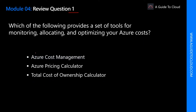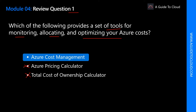Which of the following provides a set of tools for monitoring, allocating, and optimizing your Azure cost? The key word here is 'a set of tools' for those three functions. Total Cost of Ownership (TCO) gives you an estimate on cost if you migrate from on-premises to Azure. Azure Pricing Calculator gives you an estimate on Azure services. The correct answer is Azure Cost Management — it provides a set of tools for monitoring, allocating, and optimizing your Azure cost.